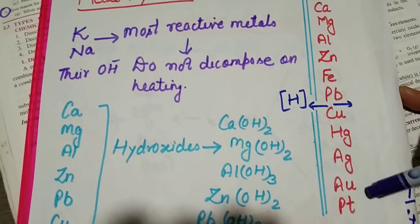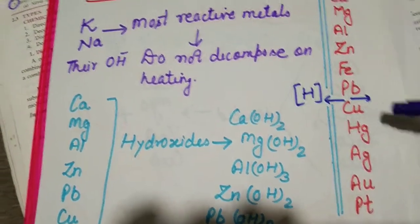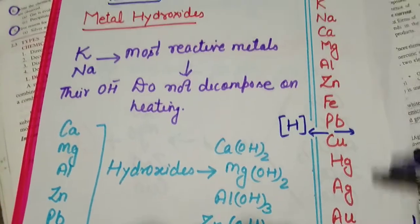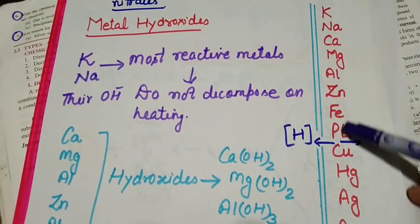Metals after hydrogen are very less reactive, and those at the bottom are the least reactive. So this is called the metal activity series.